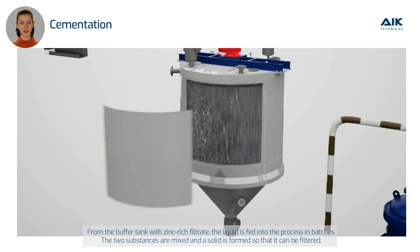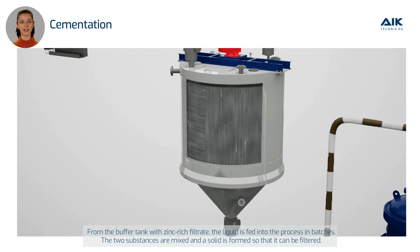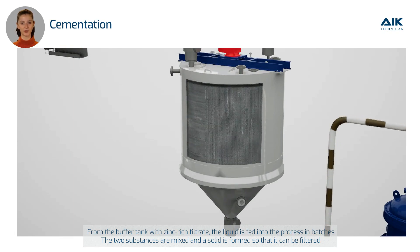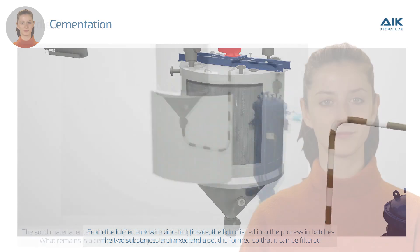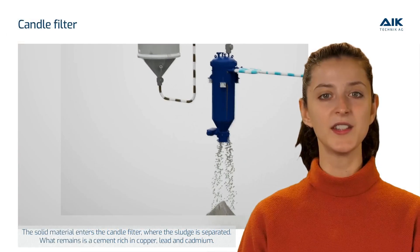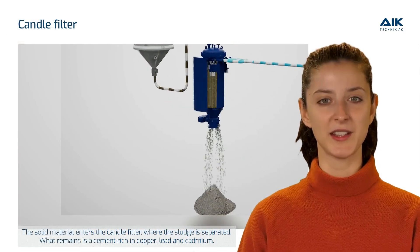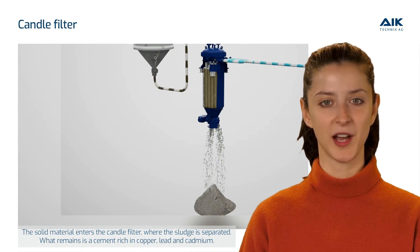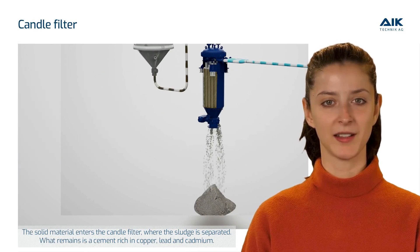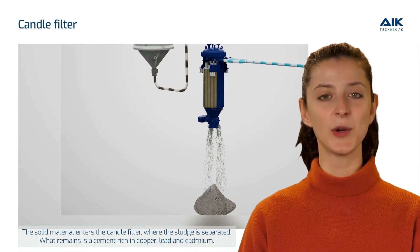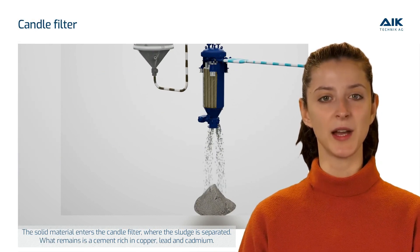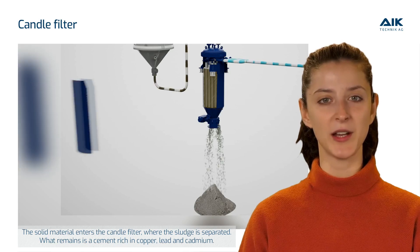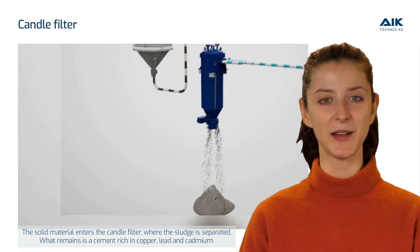The two substances are mixed and a solid is formed so that it can be filtered. The solid material enters the candle filter, where the sludge is separated. What remains is a cement rich in copper, lead, and cadmium.